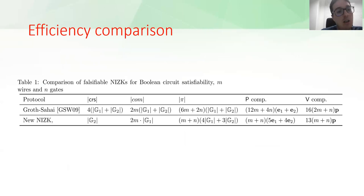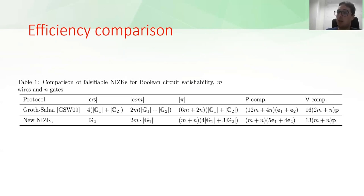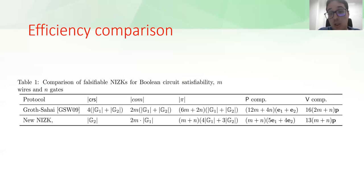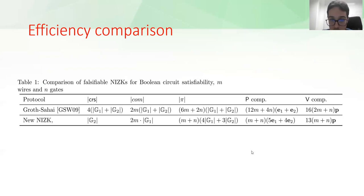Another example is a comparison of NIZKs based on falsifiable assumptions for Boolean circuit satisfiability. Here we can see that we save several elements, particularly in group 2. First, note that the commitment—which in this case is the statement—in the Groth-Sahai case must be given in both group 1 and group 2, while in our case it need only be given in group 1, saving a lot. Additionally, the prover is more efficient and the computational complexity is significantly better.